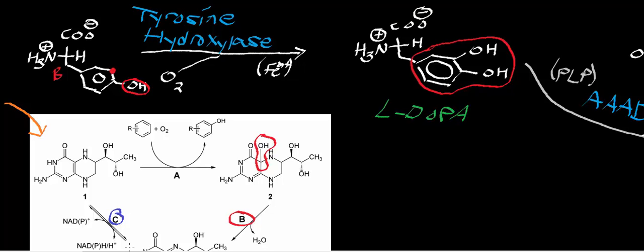While tetrahydrobiopterin is out of the active site, feedback-type inhibition can occur. Looking later in this pathway, we synthesize dopamine, norepinephrine, and epinephrine. These three catecholamines can come back into the active site of tyrosine hydroxylase and block tetrahydrobiopterin from getting in. If it can't bind tetrahydrobiopterin to the non-heme iron, it can't do the reaction. So dopamine, norepinephrine, and epinephrine do a pseudo-type feedback inhibition by preventing tetrahydrobiopterin from acting as a substrate.